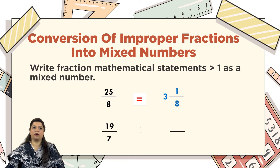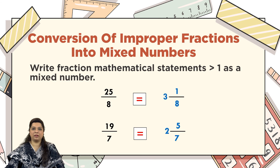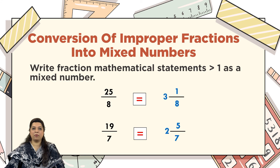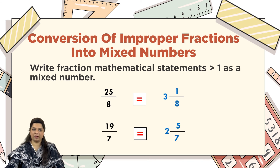Another example: 19 upon 7. Here 7 is your divisor and 19 is your dividend. 7 times 2 is 14; 19 minus 14 gives remainder 5. Therefore 5 is your numerator, 2 is your whole number, and 7 remains your denominator, giving the mixed number 2 whole number 5 upon 7. This confirms these fractions are all greater than 1 — 3 is larger than 1, 2 is larger than 1.